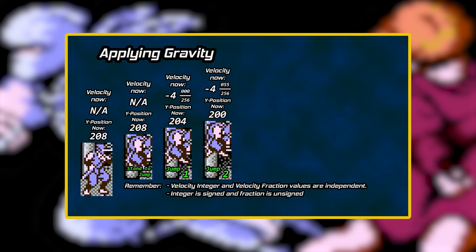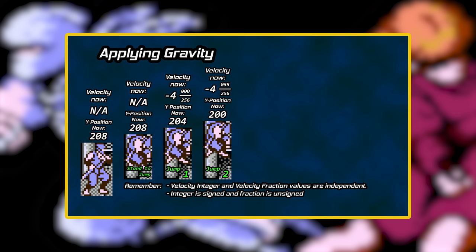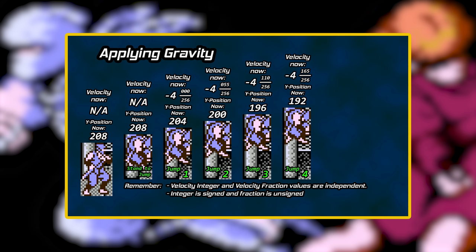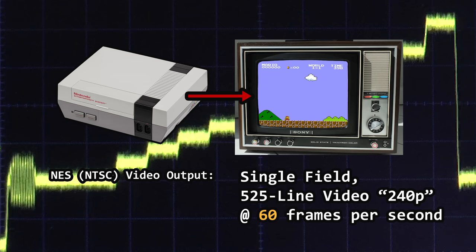We examined this in the Ninja Gaiden episode of Behind the Code. The game adds just over 20% of a pixel each frame to push gravity's influence. Wouldn't this value or other values close to it translate fairly well to other NES games? Sure, so long as the game runs at 60 frames per second. But how could it not? Didn't I just say that the video output frame rate is 60 frames per second to the television? The frame rate of the game doesn't always match the video output frame rate of the console.